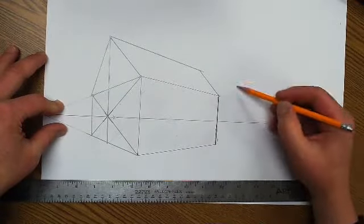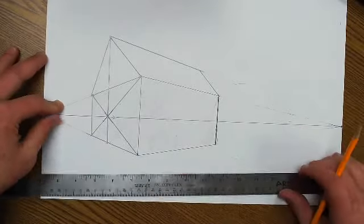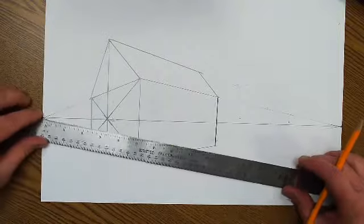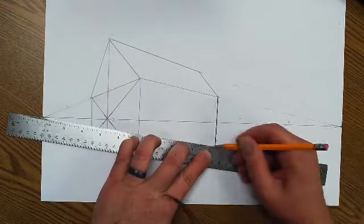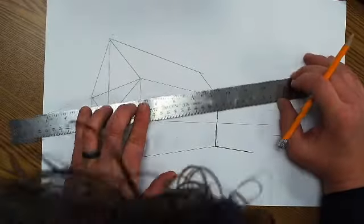So now this part here will be considered a left side of the building. So we're going to use the vanishing point on our left side and we're going to go through the corner, the inside corner of the house and draw a line out.